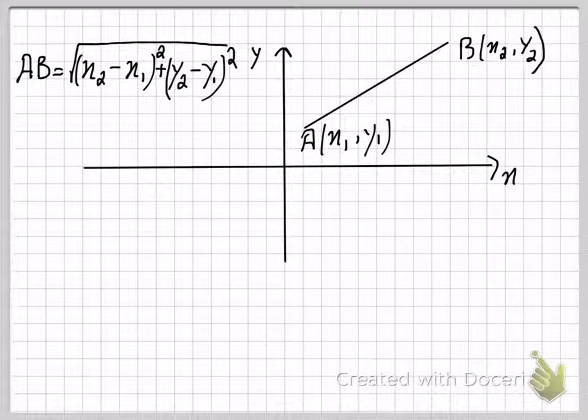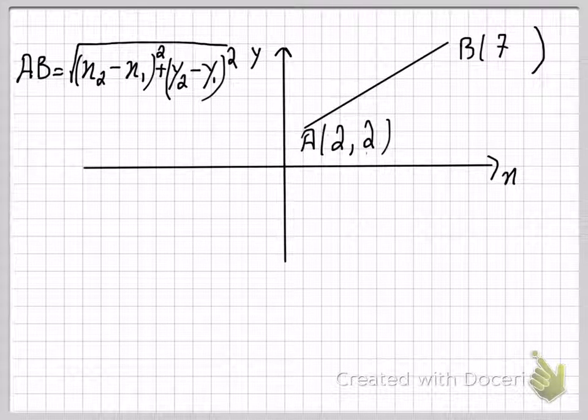Now let's quickly do an example with this. Let's say instead of having x1 and y1, we had point A at (2, 2), and instead of having x2 and y2, we had point B at (7, 8). Now if I want to calculate the distance between these two points...